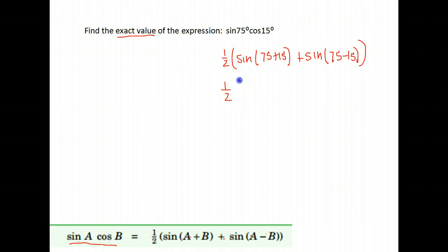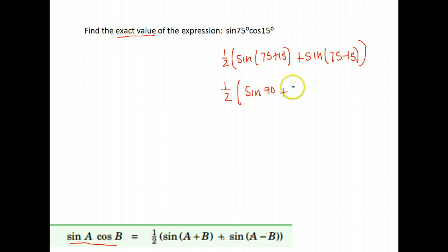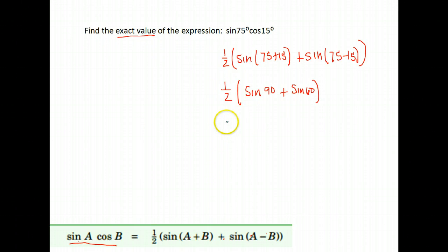That gives us one-half of the sine of 90 — since 75 plus 15 is 90 — plus the sine of 60, since 75 minus 15 is 60. The sine of 90 degrees is 1, and the sine of 60 degrees is the square root of 3 over 2. Hopefully you either have these memorized or have your chart handy.